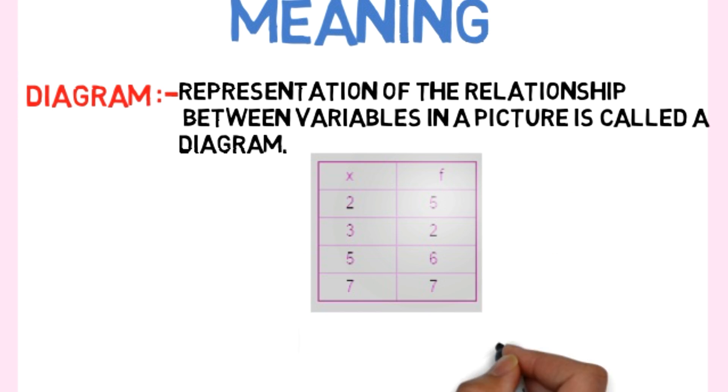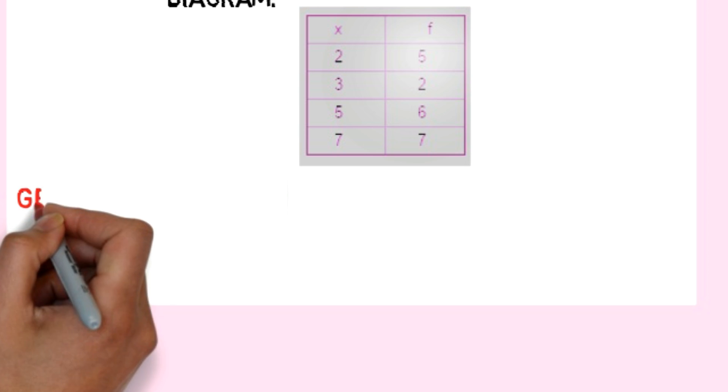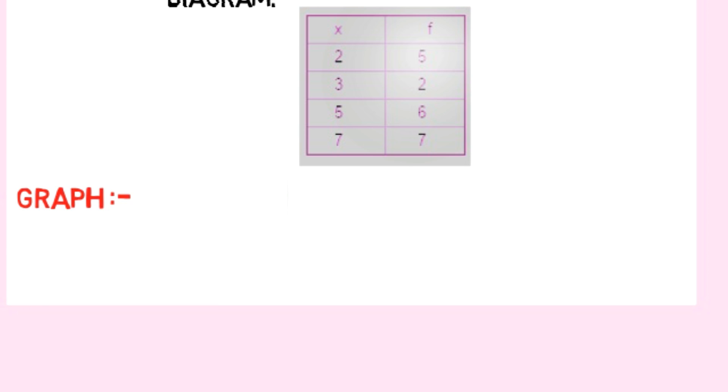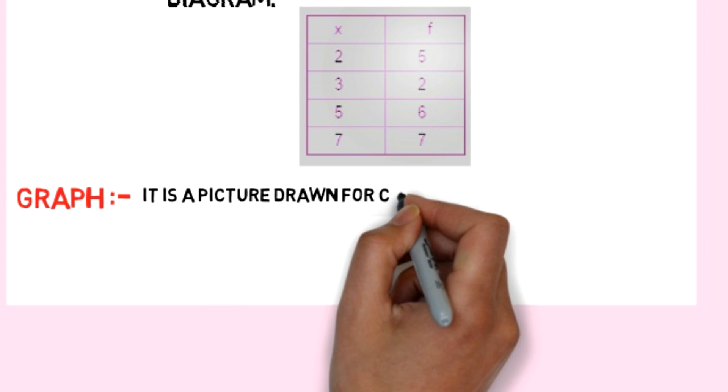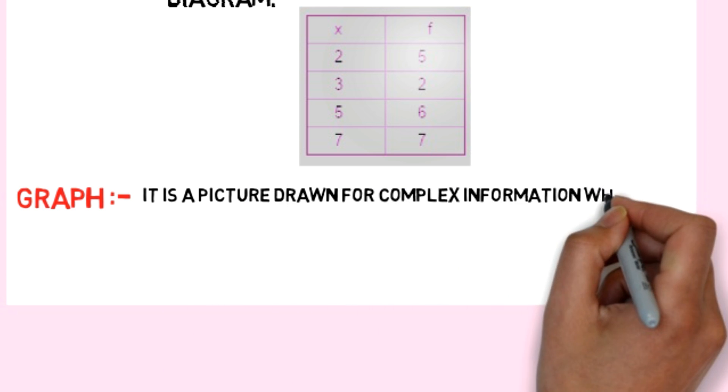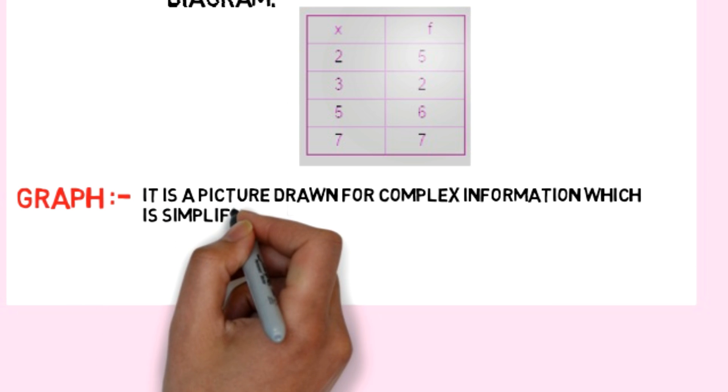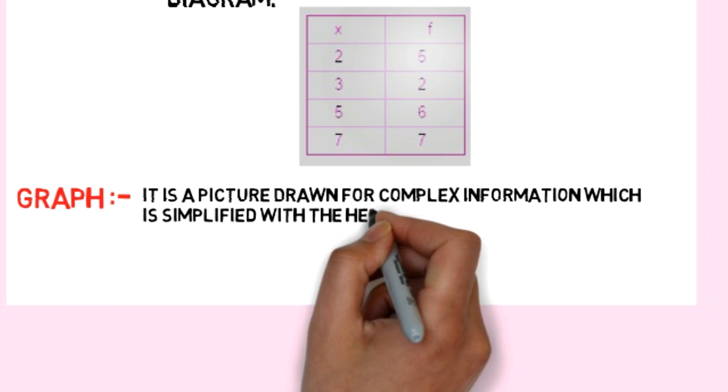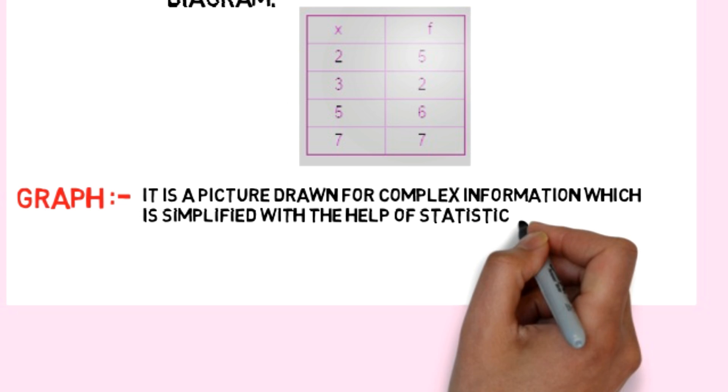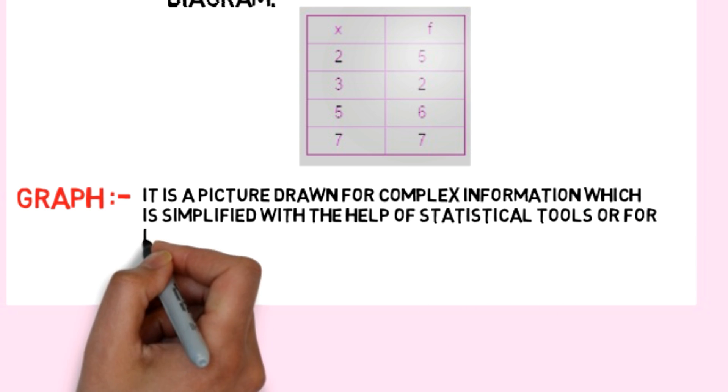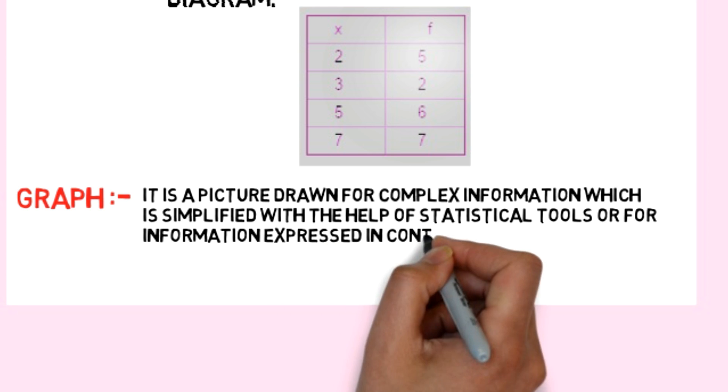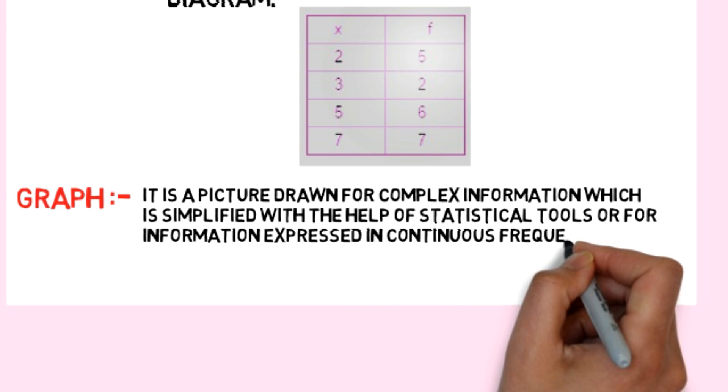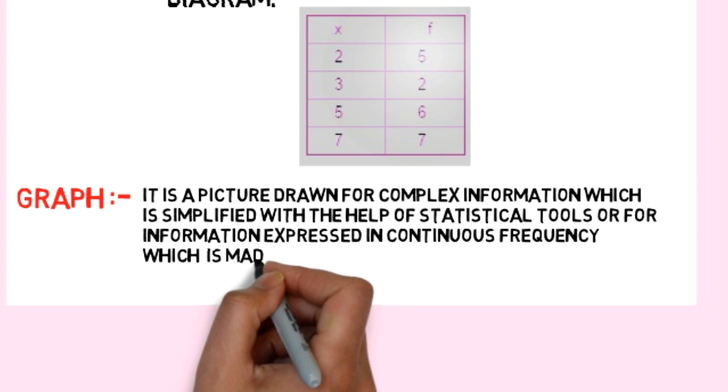Discrete frequency distribution means a frequency distribution which is countable. Let's take an example: sales of apple in a day. We can count how much sale is done in one day in a market, so it is called discrete frequency distribution. The picture of discrete frequency distribution is given below.